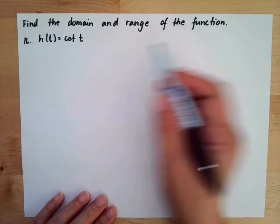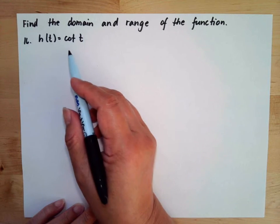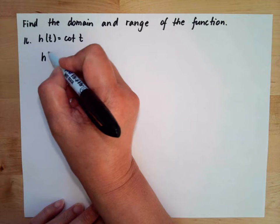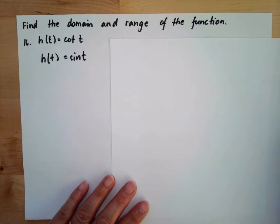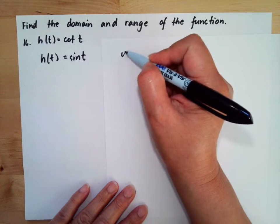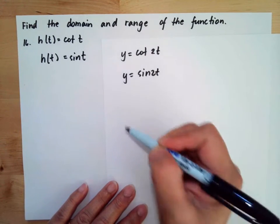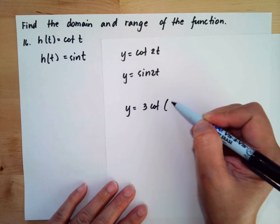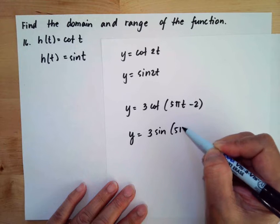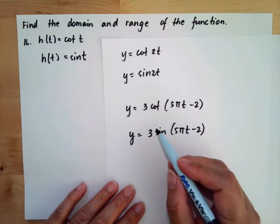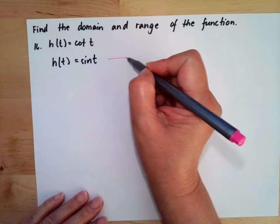Find the domain and range of the function. For number 16, we have a sub t is equal to cotangent t. To determine the domain and range of cotangent t, we need to graph first our sine function. If the given function is cotangent 2t, then you need to graph sine 2t first. For this problem we'll work with the original cotangent t.